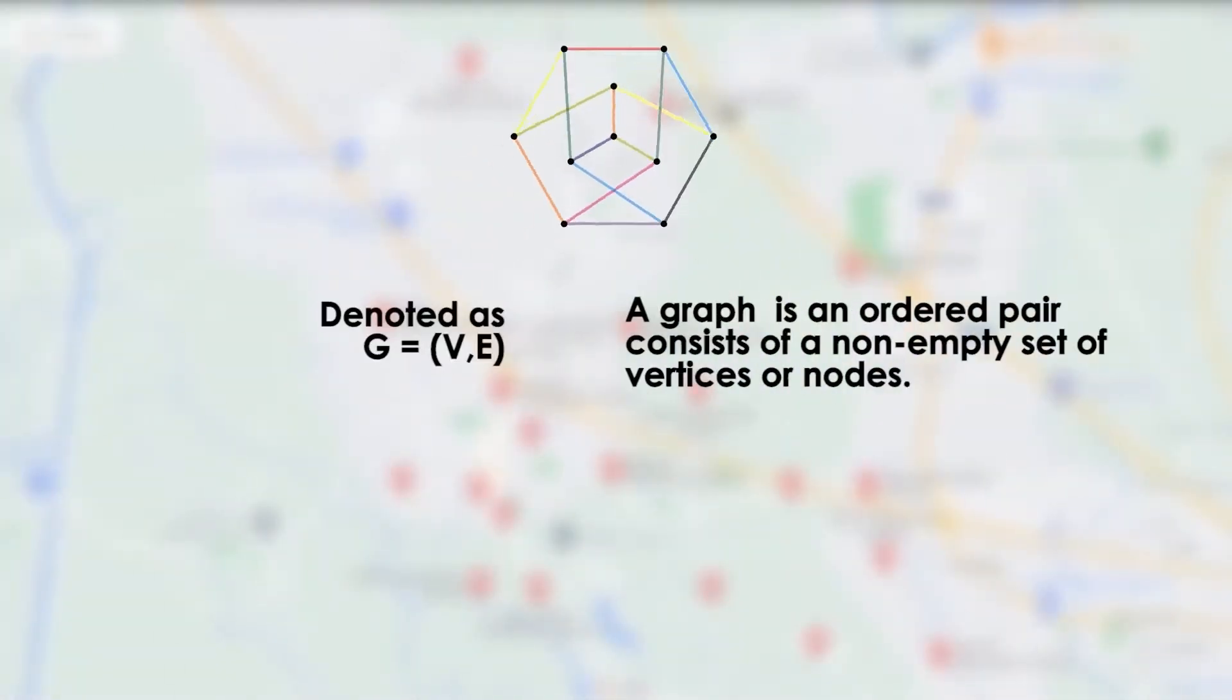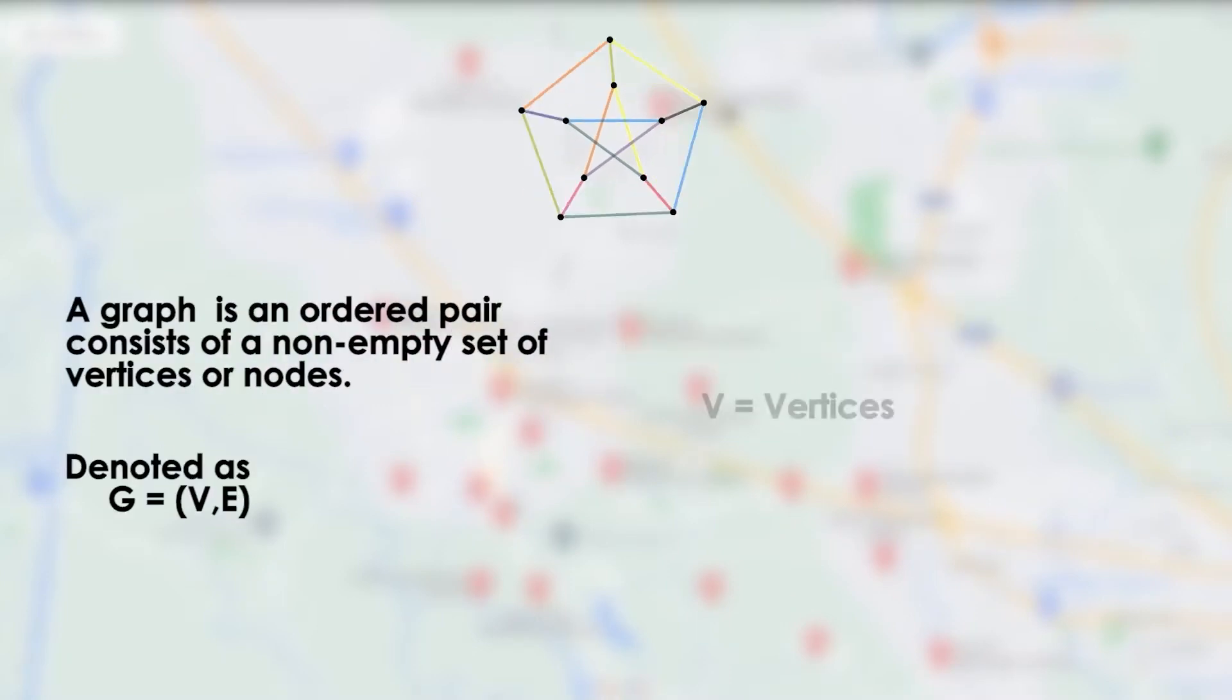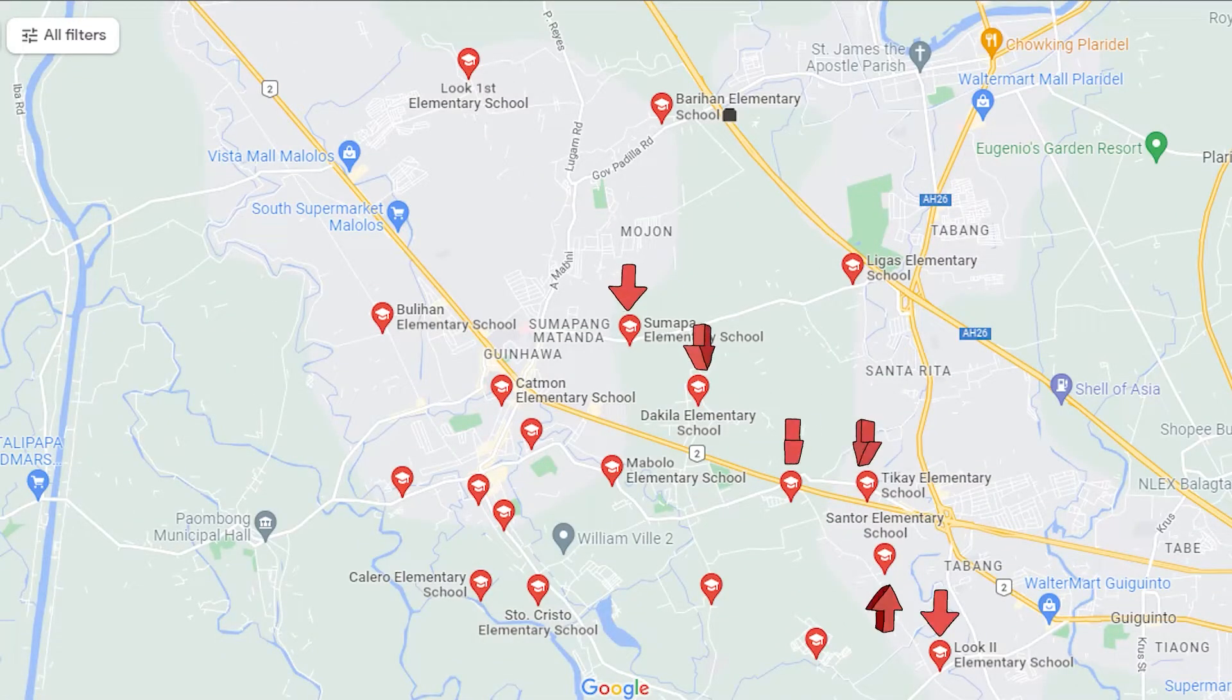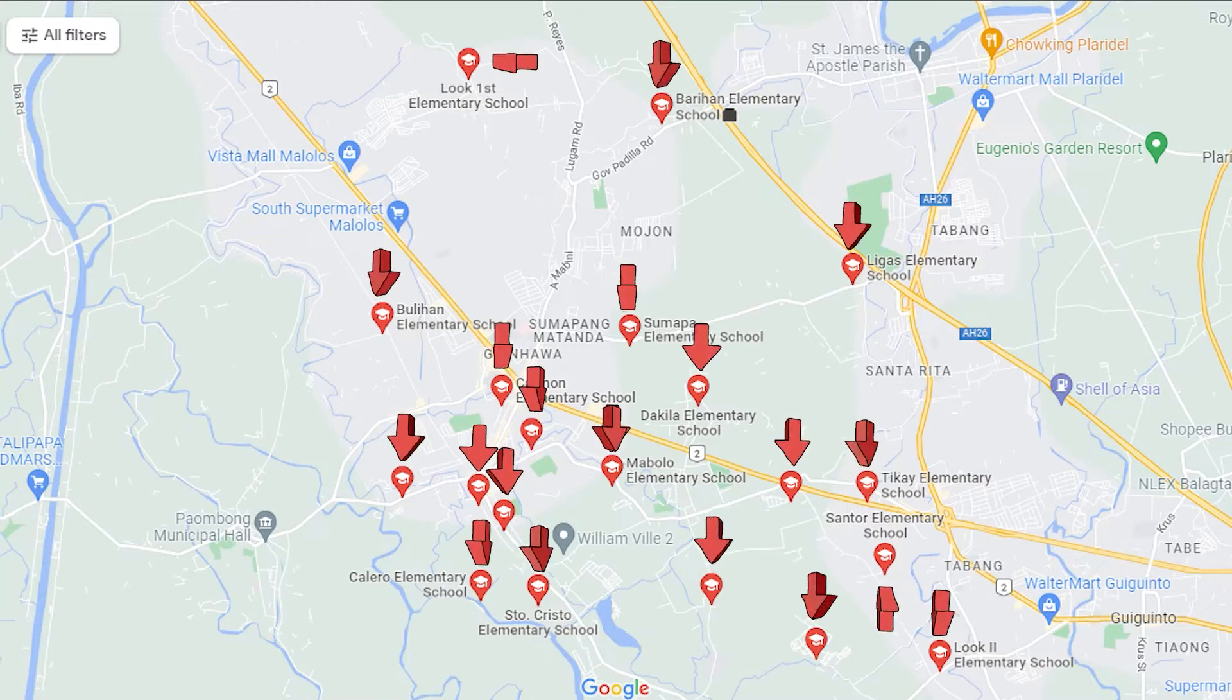To begin, graph is an ordered pair denoted as G equals the quantity of VE that consists of a non-empty set of objects called vertices or nodes, which are represented by the letter V, and a set consisting of two elements subsets of V called edges, which are represented by letter E. In our research, every elementary school is a vertex and each road connecting them is an edge.